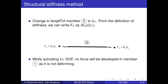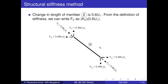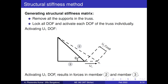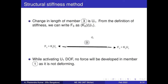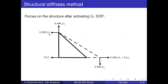Now coming to member 3. The length of member 3 is also increasing due to u1, so a force k3 times u1 is generated. This is because u1 is the displacement of member 3 — the change in length equals u1, so using the stiffness definition, the force is k3 times u1. Only these two members have forces. After activating the u1 degree of freedom, this is the final free body diagram for equilibrium.